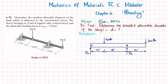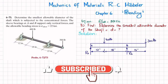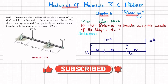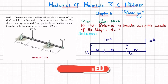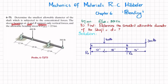Welcome back. In this video we are going to solve problem 6-73, taken from chapter 6 on bending from the book Mechanics of Materials by R.C. Hibbeler. The statement is: determine the smallest allowable diameter of the shaft which is subjected to concentrated forces. The sleeve bearings at A and B support only vertical forces, and the allowable bending stress is 22 ksi.